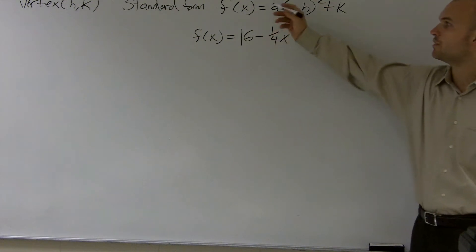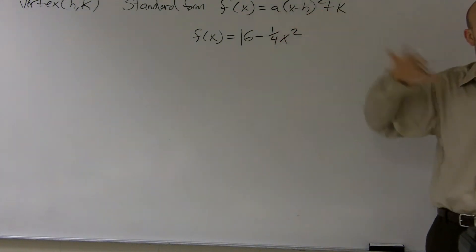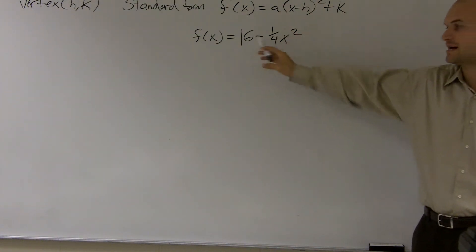First thing we want to do is we want to put it in our standard form. Because by putting it in our standard form, that's going to give us the easiest way to find the vertex. So first thing I need to do is I need to put it looking like this form. First thing is we need to put our x squared in front of our constant.